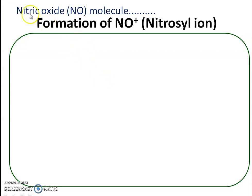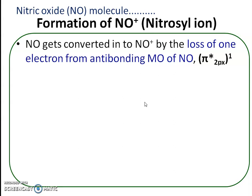In the last video we saw the molecular orbital diagram for nitric oxide (NO). The next point is the formation of NO⁺, the nitrosyl ion. Nitric oxide gets converted into the nitrosyl ion by the loss of one electron from the antibonding molecular orbital. In nitric oxide, there is one unpaired electron in the antibonding molecular orbital, that is π* 2px, and when this electron is lost, nitric oxide becomes the nitrosyl ion.